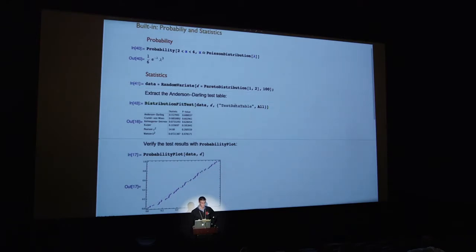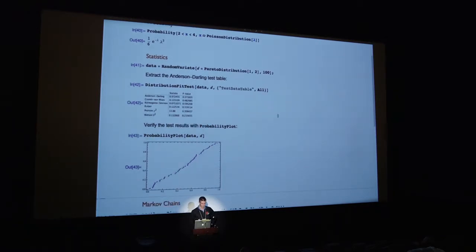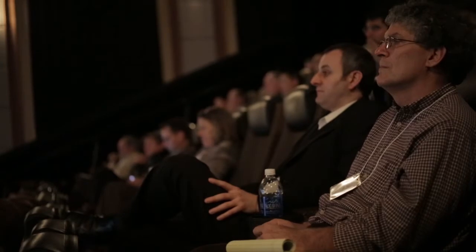Other built-in capabilities: symbolic computations — of course you can do integration, derivations, and so on. Here's some probability problems and statistics. Here I'm basically creating a test table to see how good a fit I get with a specific distribution. Markov chains — I think this is an interesting problem today. This one goes with a certain probability, jumping between rain and sun. Since it was raining here today, it was a good example to pick.